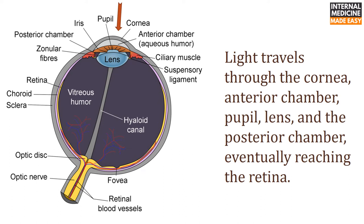Light travels through the cornea, anterior chamber, pupil, lens, and the posterior chamber, eventually reaching the retina.